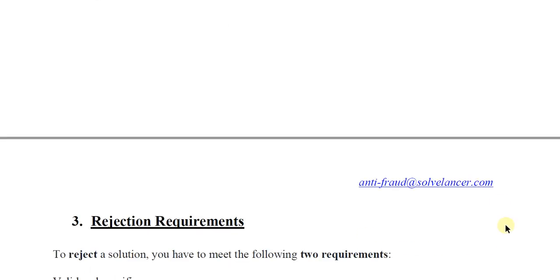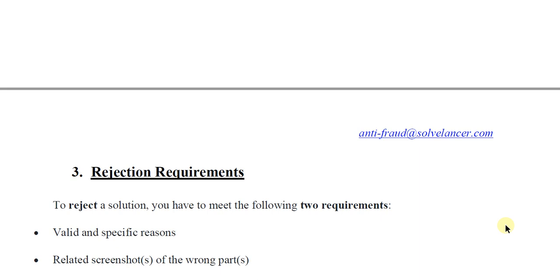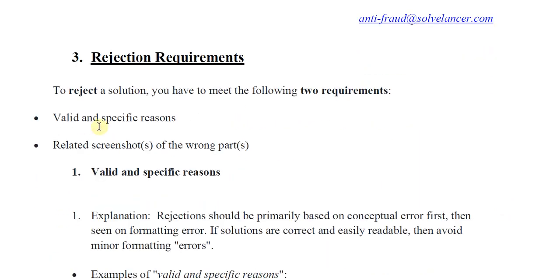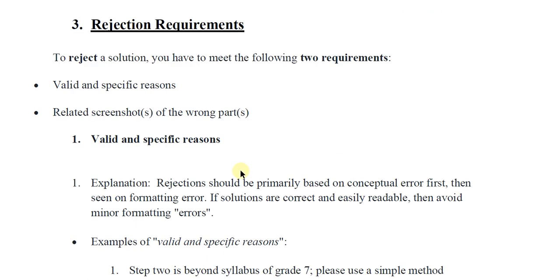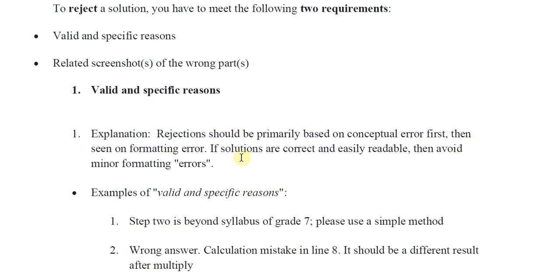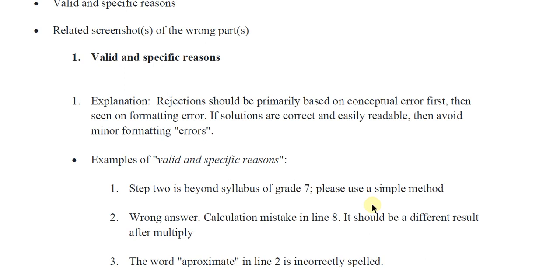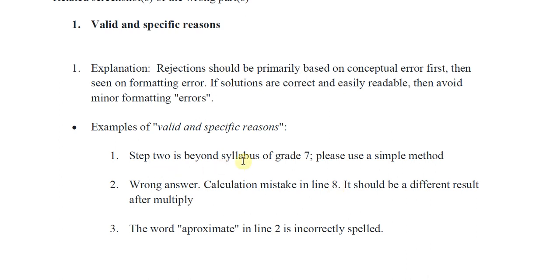The rejection requirements: to reject a solution you must meet two requirements. First, provide a valid and specific reason with a related screenshot of the wrong part — attach a screenshot mentioning which part or which step is wrong. Second, rejection should be primarily based on conceptual error first, and then formatting errors. If solutions are correct and easily readable, avoid rejecting for minor formatting errors.